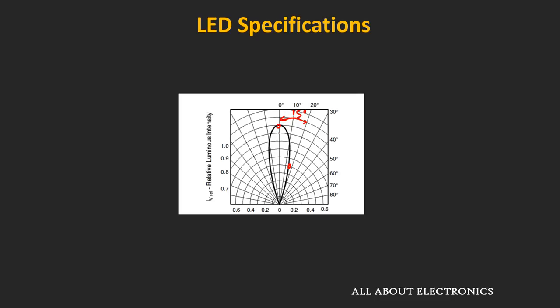And if we consider the full angle, then it will be equal to 30 degrees. But in the datasheet, usually it is specified as the half angle. So this is all about the different specifications of the LED.